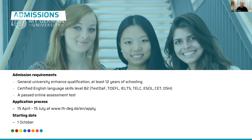If you want to be part of our program, you need a general university entrance qualification, which means at least 12 years of schooling. You need a certified English language skill at level B2, and you should complete an online assessment test — which is a very easy one, so don't worry. The application period is from April 15th to July 15th at www.th-dhe.de/en/apply, and the starting date is October 1st.